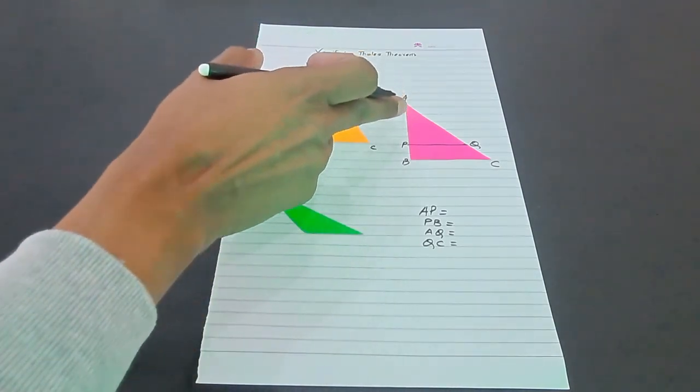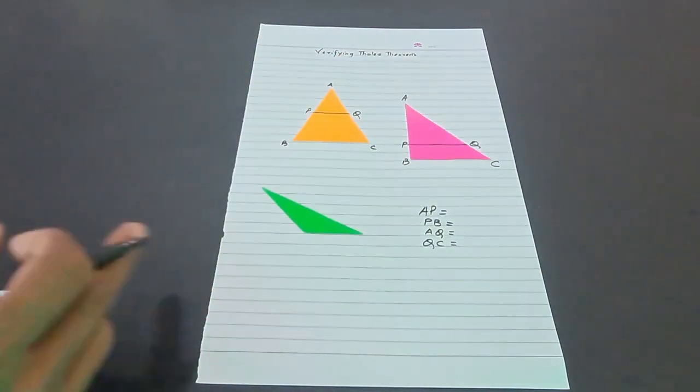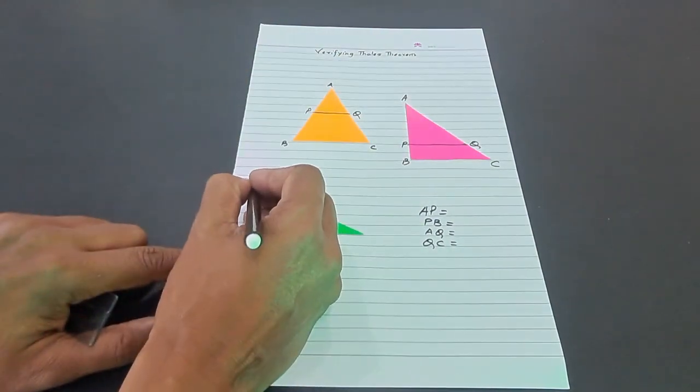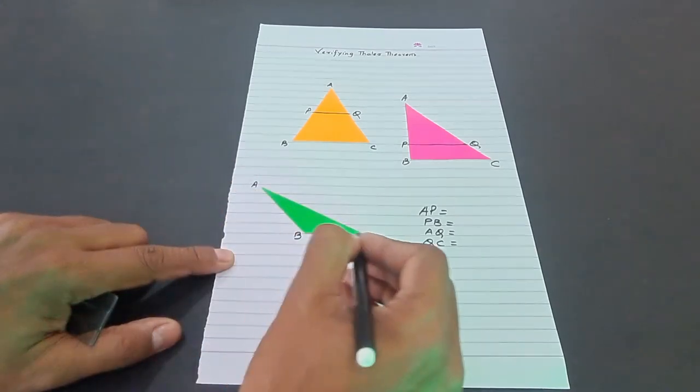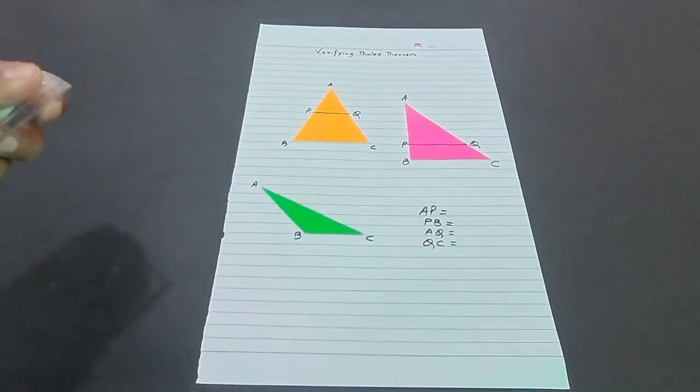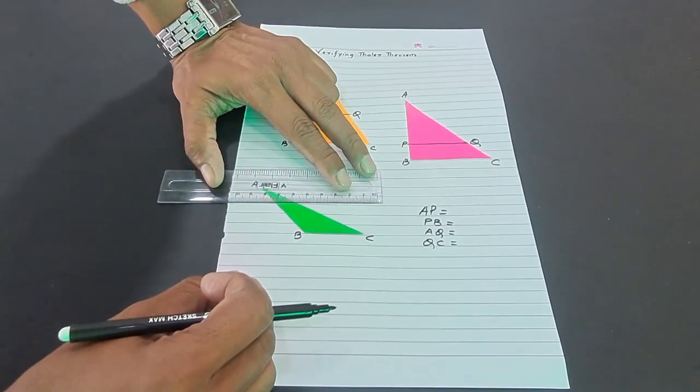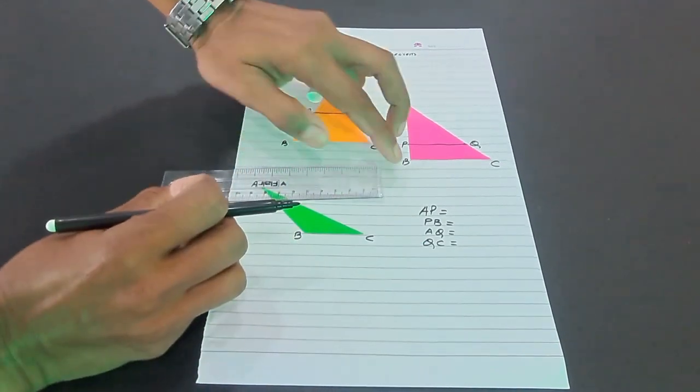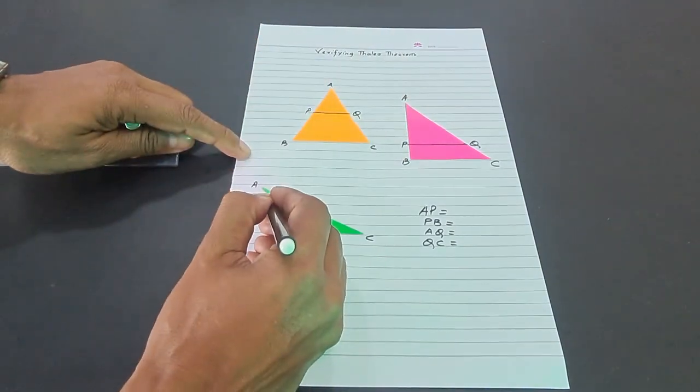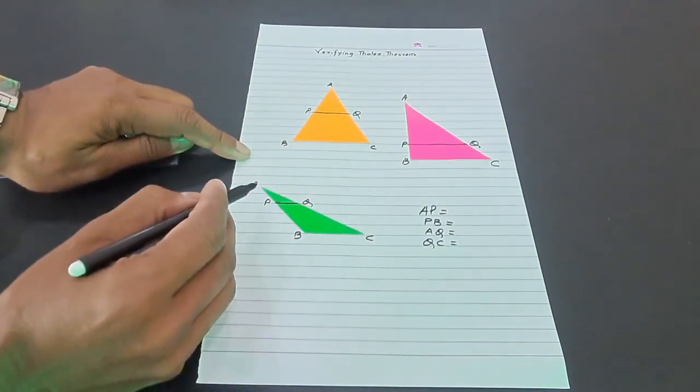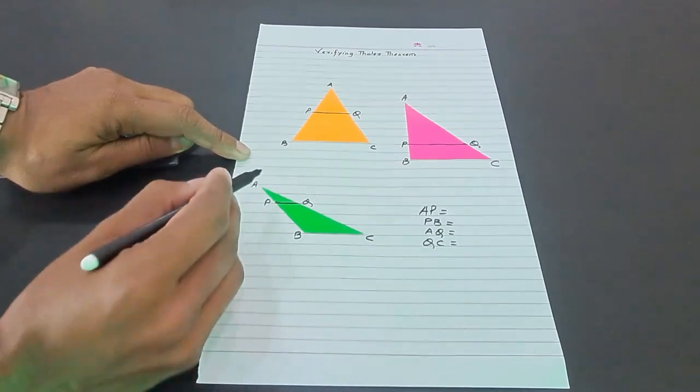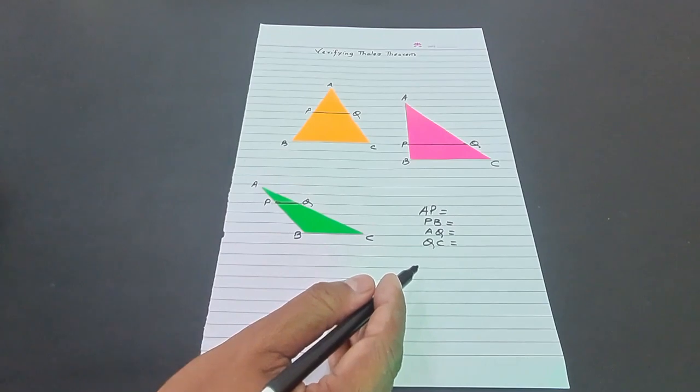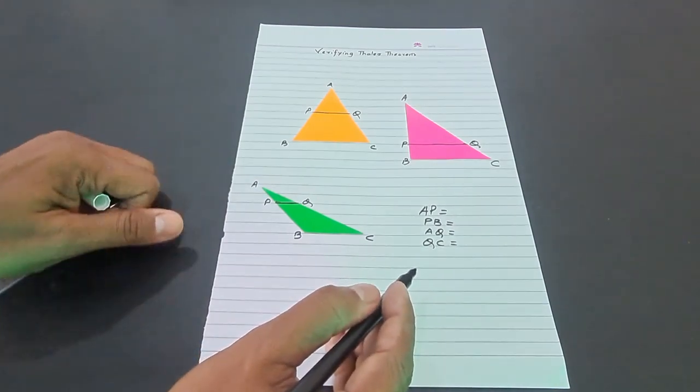In the obtuse angle triangle, let us also name this ABC and draw a parallel line. This time I'll take it away from BC by extending that line to get PQ parallel to BC. Again measure AP, PB, AQ, and QC. These are the four measurements you have to make after making all these twelve measurements, four in each triangle.